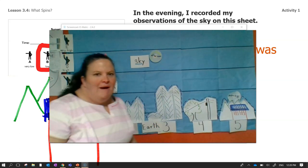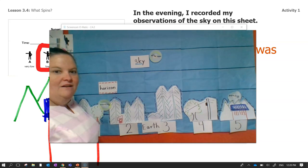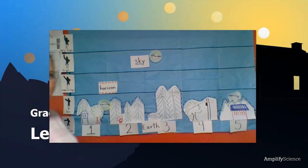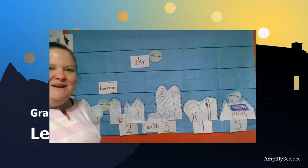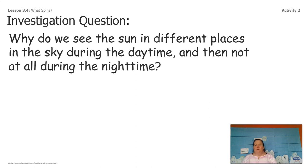What do we notice about what's happening with the sun in the morning, the afternoon, and the evening? Do you guys notice a pattern? By looking at our sky mural, we realized that the sun looks like it's in totally different places in the sky at different times. Now we need to figure out why we see the sun in different places during daytime, and then not at all during nighttime. We know the sun moves, but we don't know why it looks like the sun is moving.